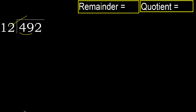With 49 and 12, multiply by which number is nearest to 49 but not greater. 12 multiplied by 5 is 60 — that is greater. Multiply by 4: 48. Ok, 48 is not greater than 49.